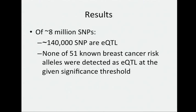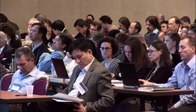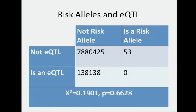Of the about 8 million SNPs, we found that about 140,000 of these were significant EQTLs. We also found that none of the 51 breast cancer risk alleles from the GWAS catalog were detected as EQTLs. So we see here that there does not seem to be an association between risk allele status and EQTL status.